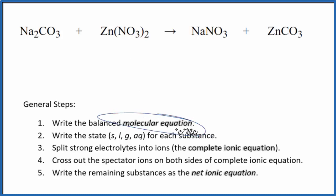First thing we need to do with net ionic equations is balance the molecular equation. You can see I have two nitrate ions here and only one here. So I'm going to put a two in front of the sodium nitrate. That'll balance the sodiums and everything else is balanced.